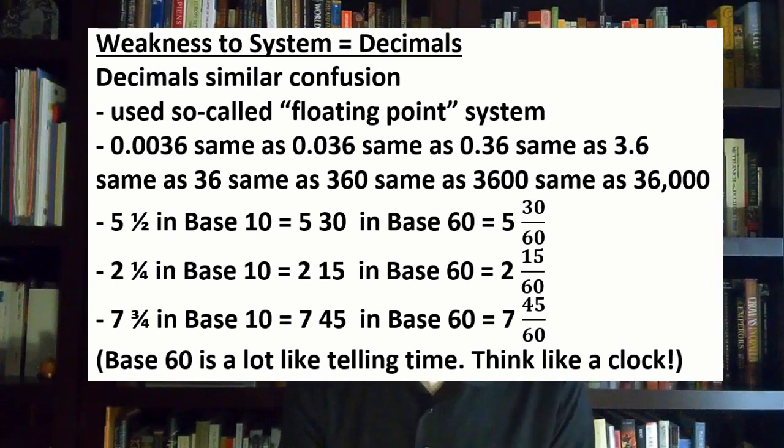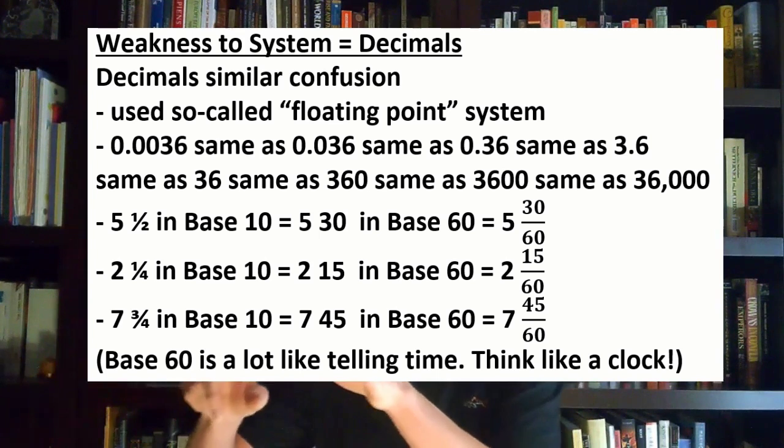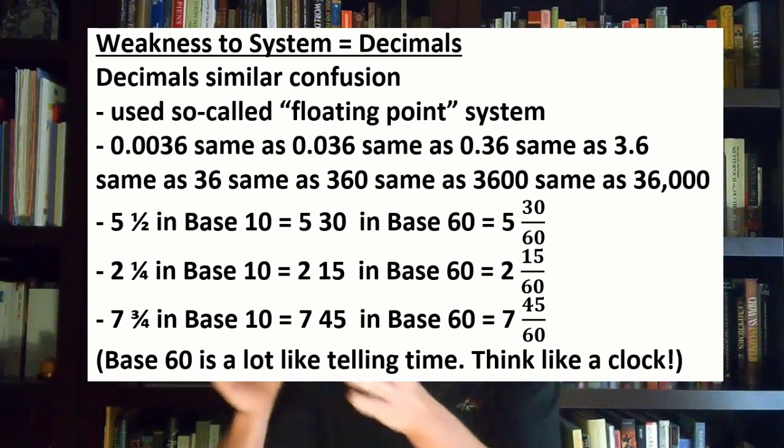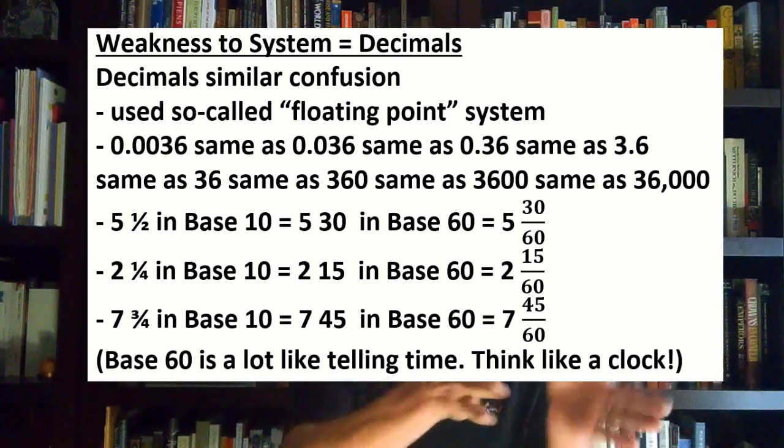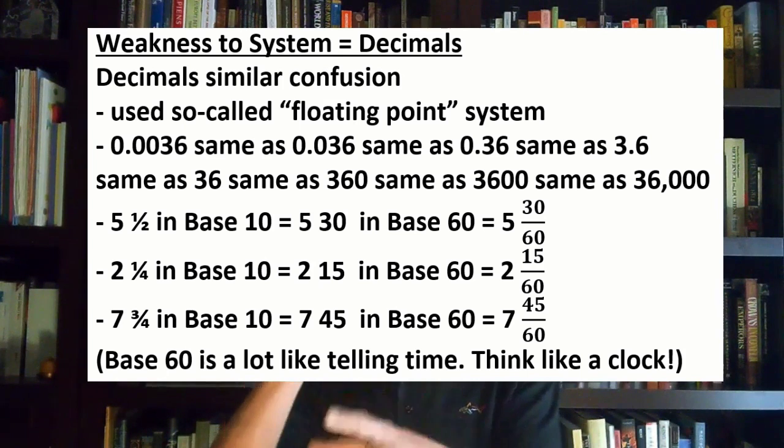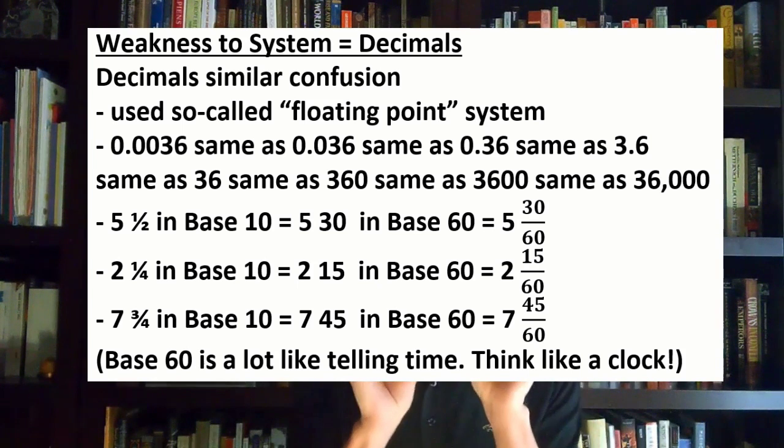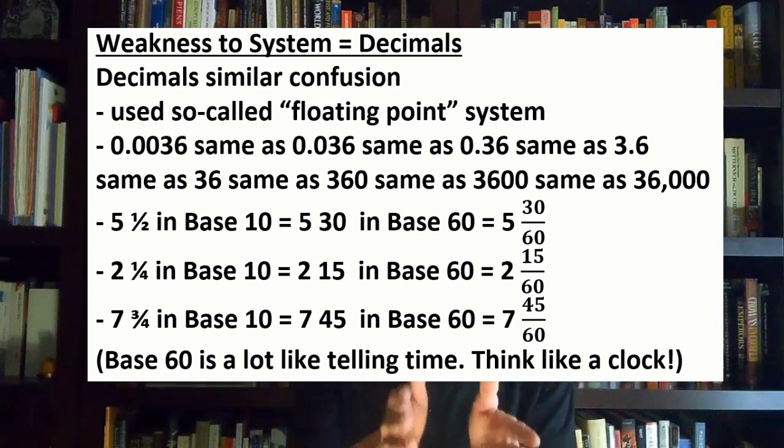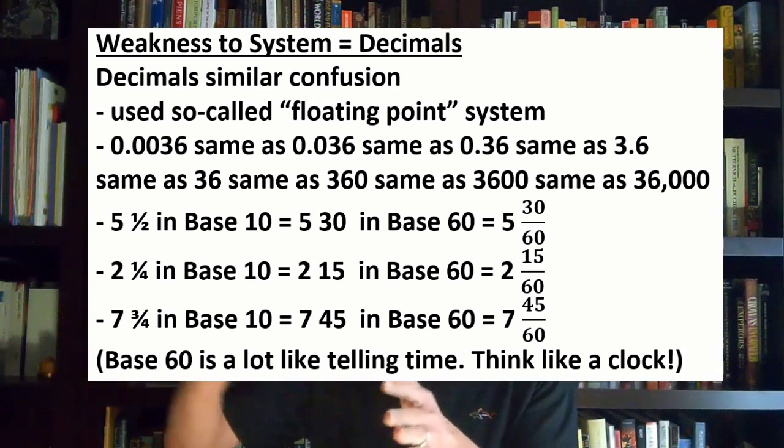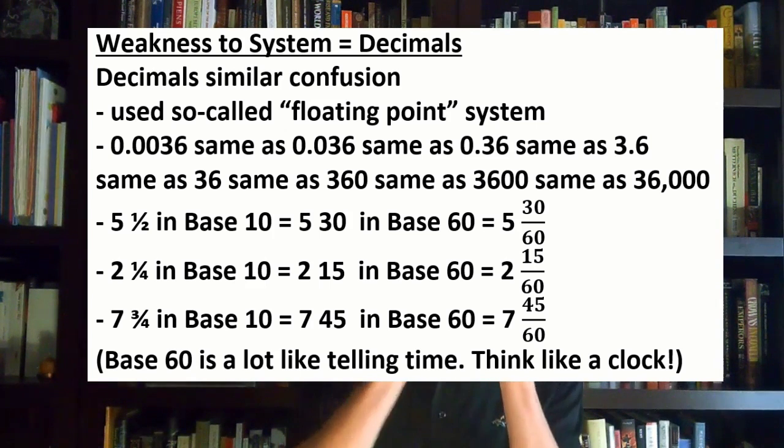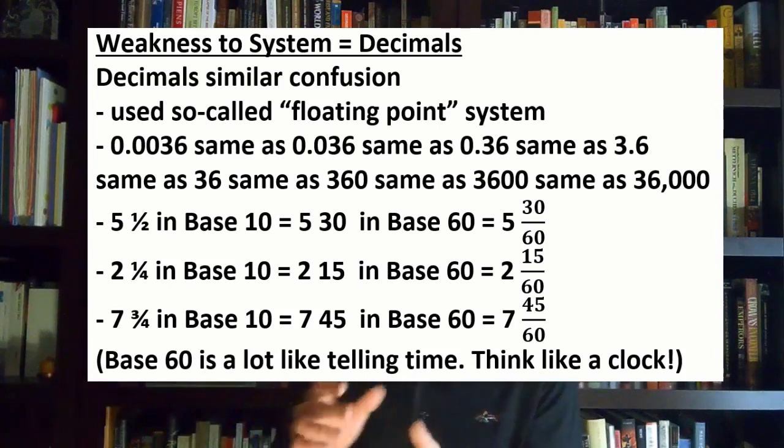Anyone who knows how to tell time, think pretend you're looking at a clock face, and this makes a little bit more sense. 5 1/2 written in base 10 would be 5 and then space 30 in base 60. When I say 5 space 30, this 30 is really 30 over 60. So 2 1/4 in base 10 would be 2 space 15, it's like 15 over 60. 7 and 3/4 would be 7 and then space 45, like having 45 over 60. We're thinking like we're looking at a clock.